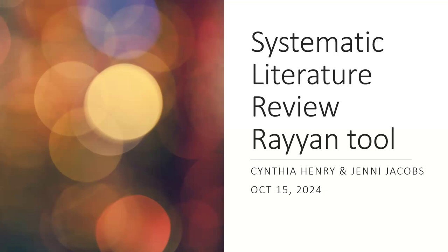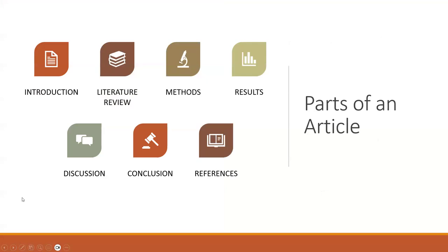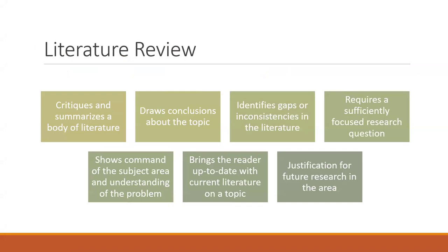Let's start by talking about the parts of an article. Of course we have the introduction, then the literature review — which is a little different between a regular article and a systematic review — then the methods, results, discussion, conclusion, and references.